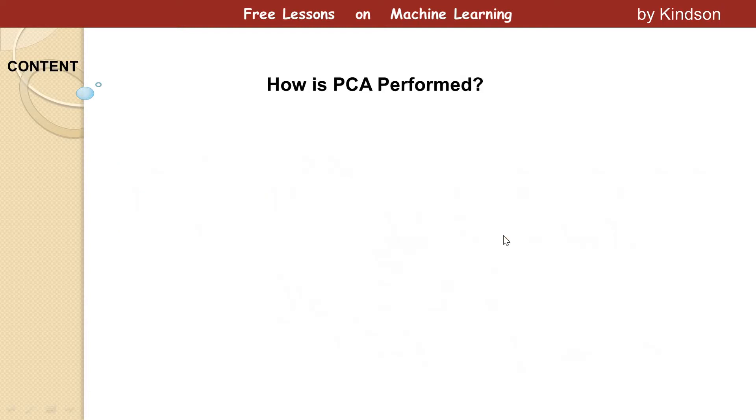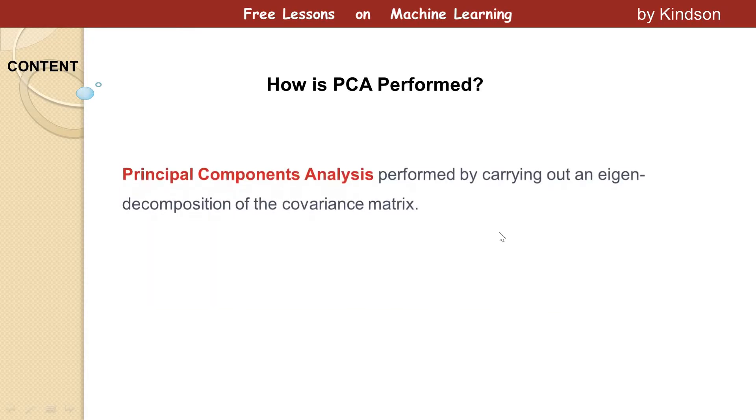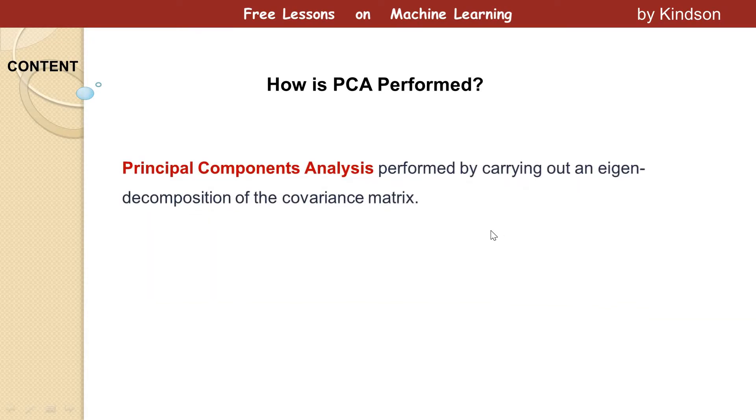So let's look at how to perform PCA. There is also a single definition that you need to put in your belts. It says principal component analysis is performed by carrying out again the composition of the covariance matrix. So this word appears again, so meaning that we need to have something to do with matrices. So that prompts us to do a review.